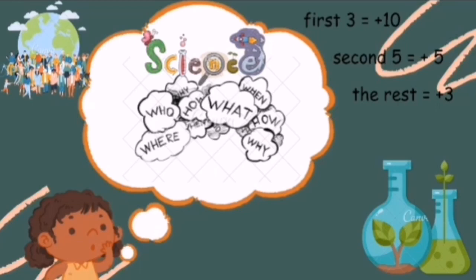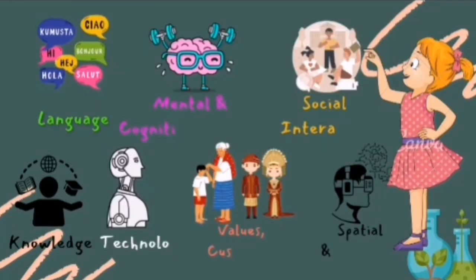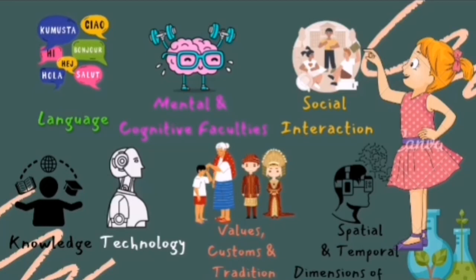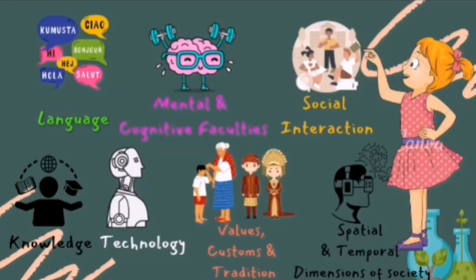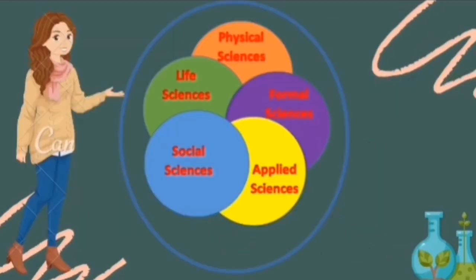For the introduction: cultural universals that are being shared by different societies and cultures around the world include, but are not limited to, language, the mental cognitive faculty, social interaction, knowledge, technology, values, custom and tradition, and the spatial and temporal dimension of society. We will be dealing with these areas of science.